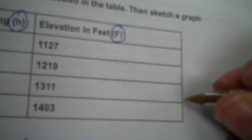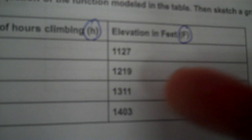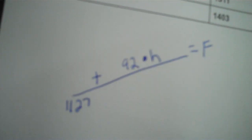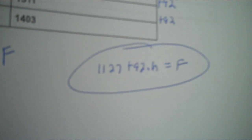The h goes by ones — it increases by one every time — so the rate of change is fairly easy to find. Start at the end of your table: 1,403 minus the previous number 1,311 is a change of positive 92, because it went up. Then 1,311 minus 1,219 is 92 again. And 1,219 minus 1,127 is also 92. So the rate per hour is 92.